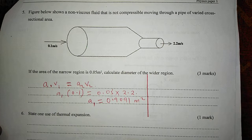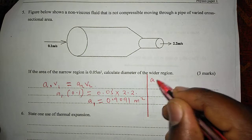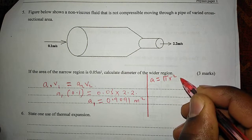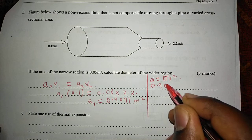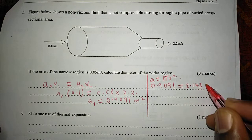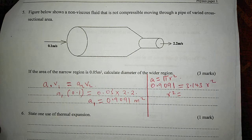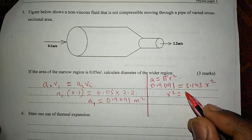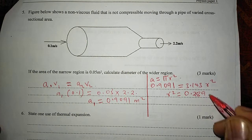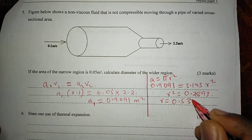Therefore, if this is the area, we can calculate the diameter as requested. We know that the area for a circular region is given by pi r squared. Therefore, 0.9091 equals pi times r squared. We can get r squared by dividing the area by 3.142, and this gives us 0.2893. Then we can get the radius by taking the square root, which gives us 0.5379.